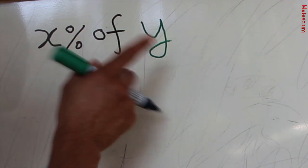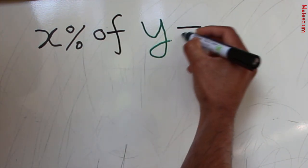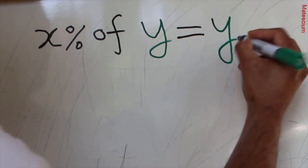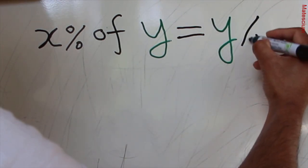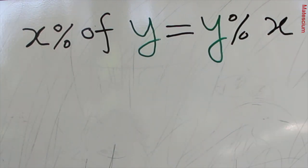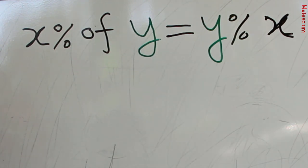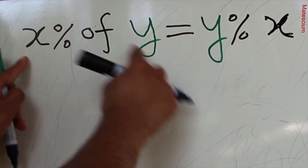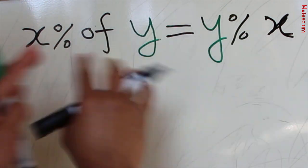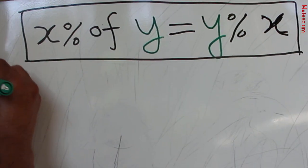What is that secret? I can rewrite this mathematical form as: x percent of y is equal to y percent of x. You are shocked, right? How is it possible? They just exchange their position — on the right-hand side, x becomes y and y becomes x, so they are equal. Let's prove it through real mathematics.